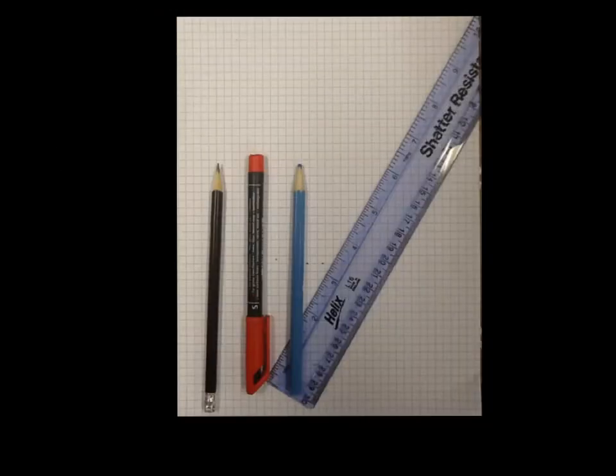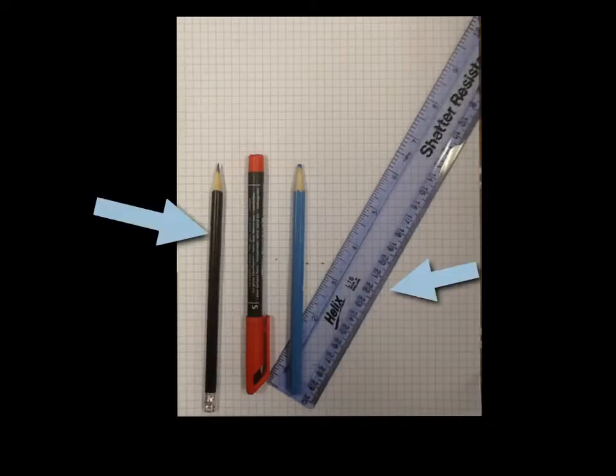Before we start, we need to check that we've got the right equipment. So the first things we're going to need are a pencil and a ruler. These two items are the most important, but what you'll also need are a blue colouring pencil or felt pen, and a red pen also.